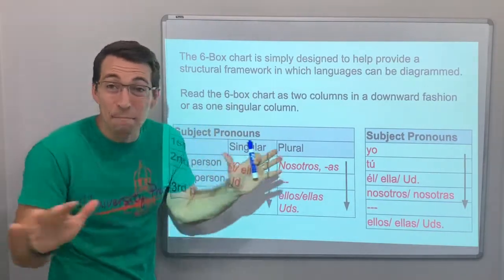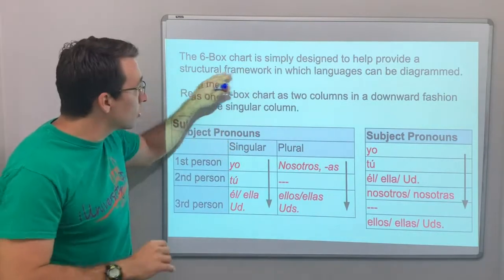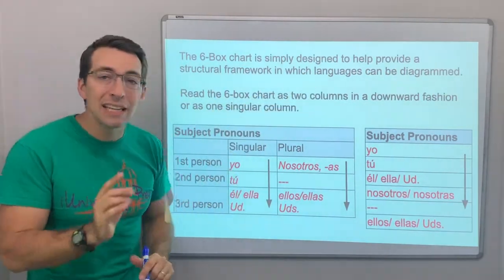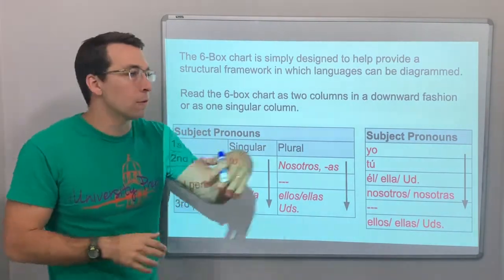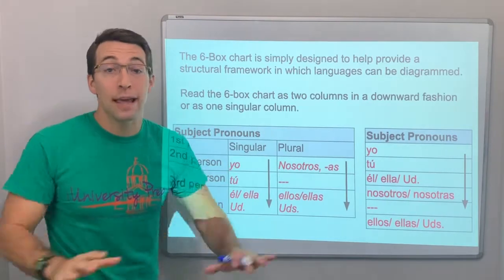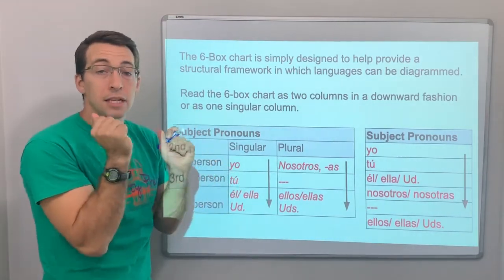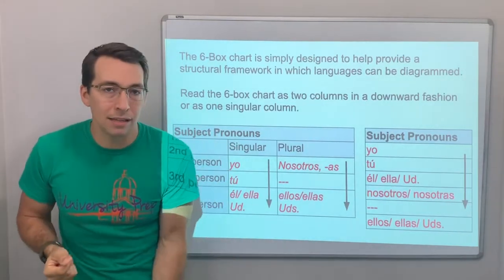So, the six-box chart is simply designed to help provide a structural framework in which languages can be diagrammed. This is not for Spanish. This is not for English, or Romanian, or French, or German. It's for language. This chart and this graph, it's universal.